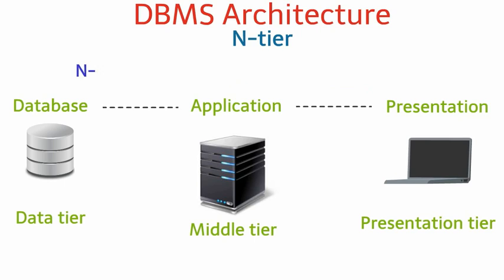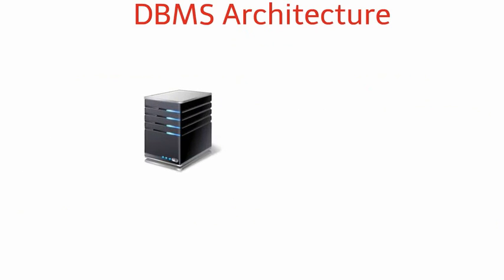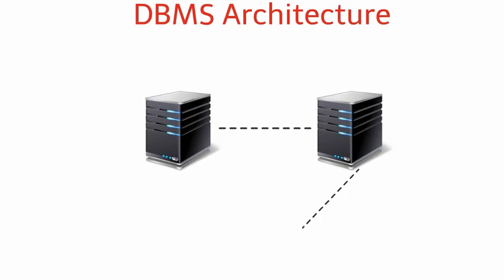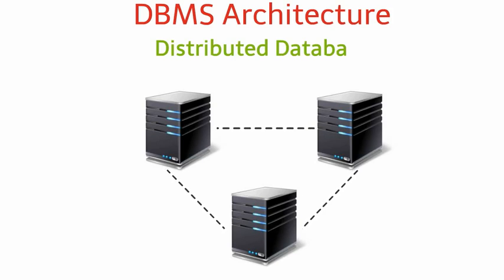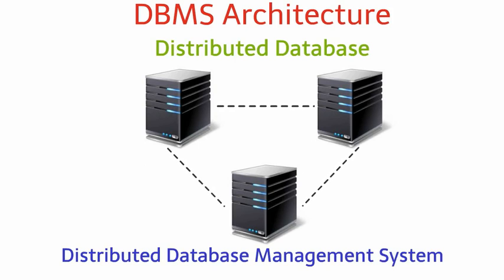In most cases, n-tier architecture begins as a three-tier model. An increase in the amount of data might lead to situations where organizations store interrelated databases on more than one server. This is known as a distributed database and is managed by a distributed database management system.